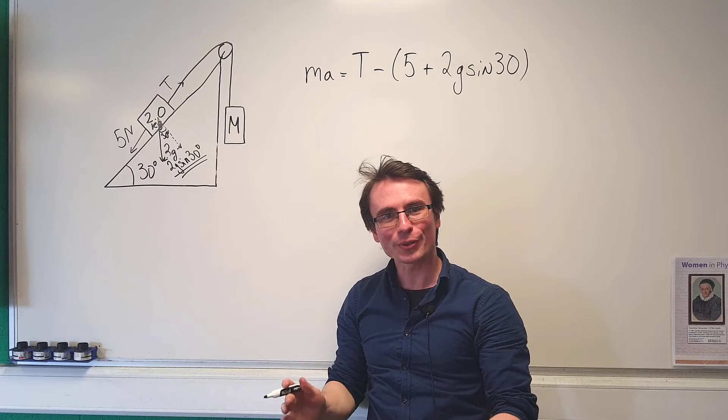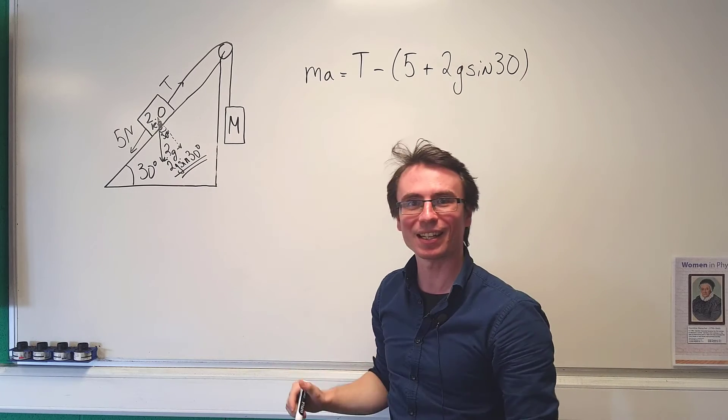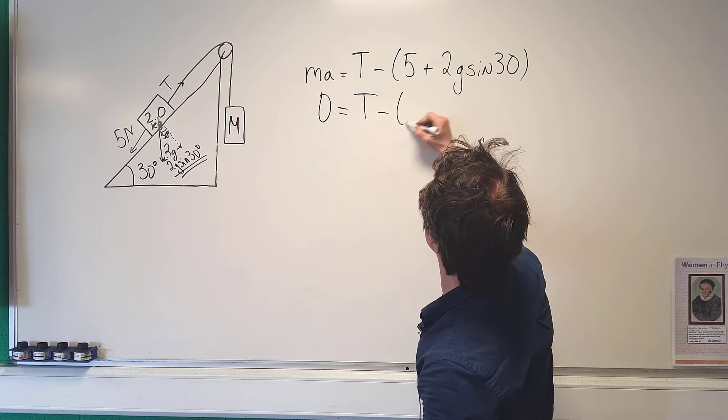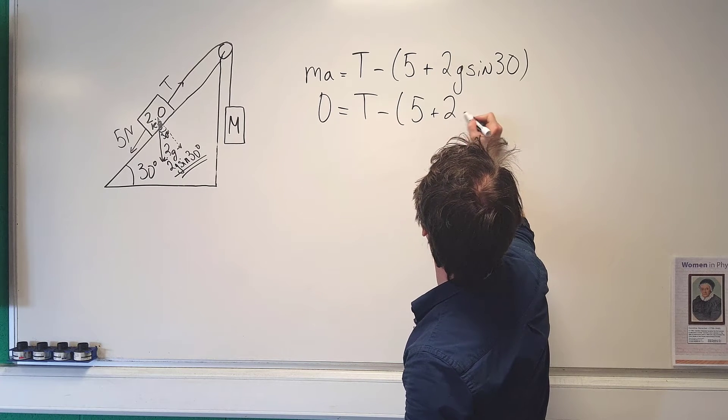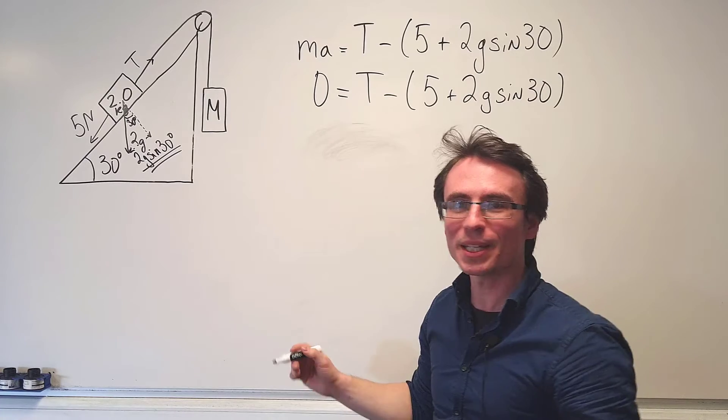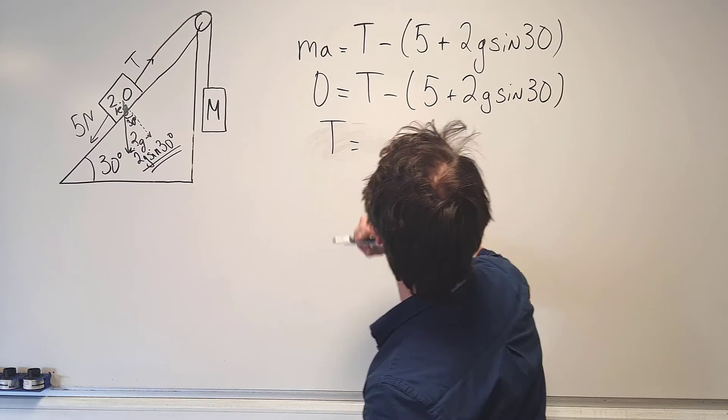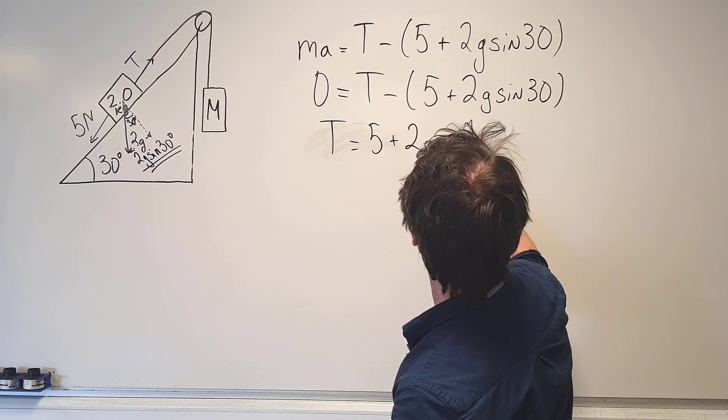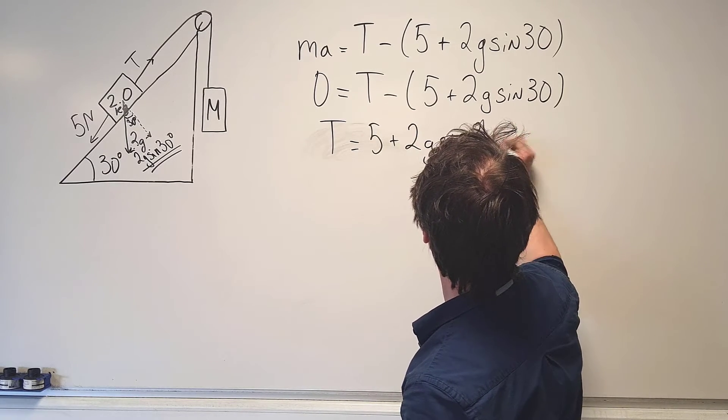Now the block is moving at a constant velocity meaning that the acceleration is zero. So zero will be equal to T minus 5 plus 2g sine 30. Meaning of course that T will be equal to 5 plus 2g sine 30.